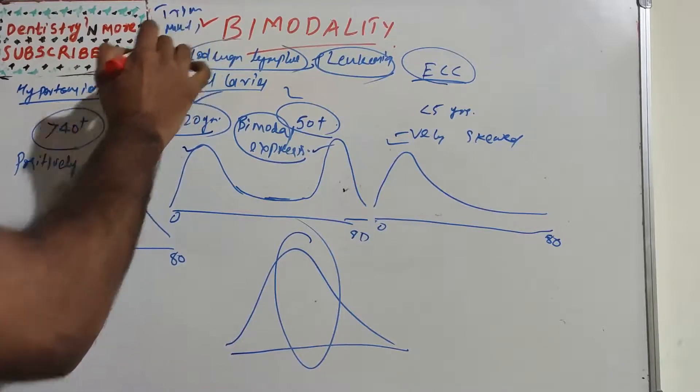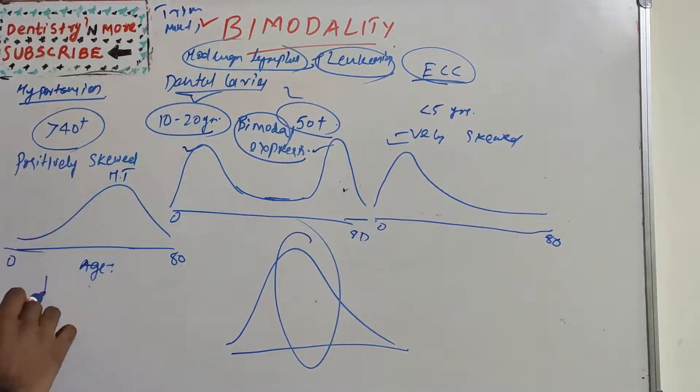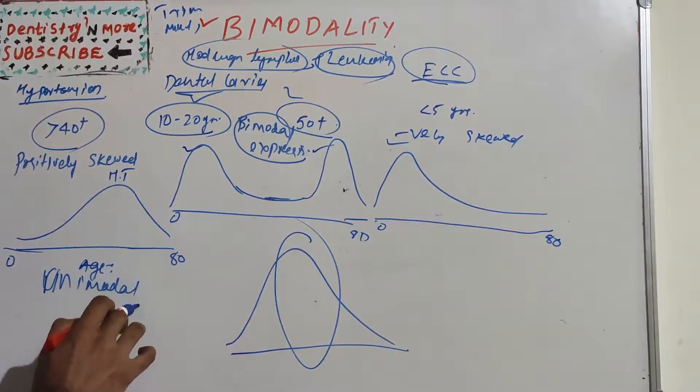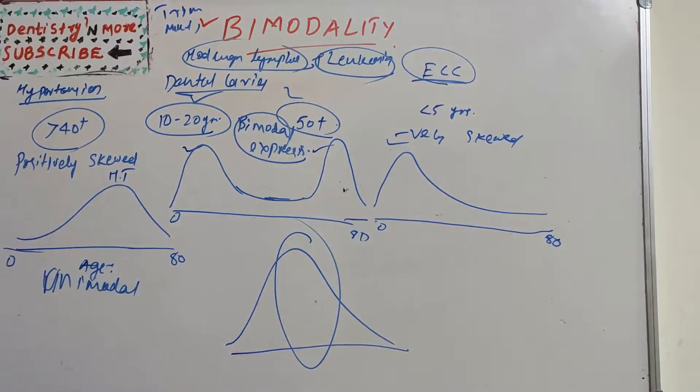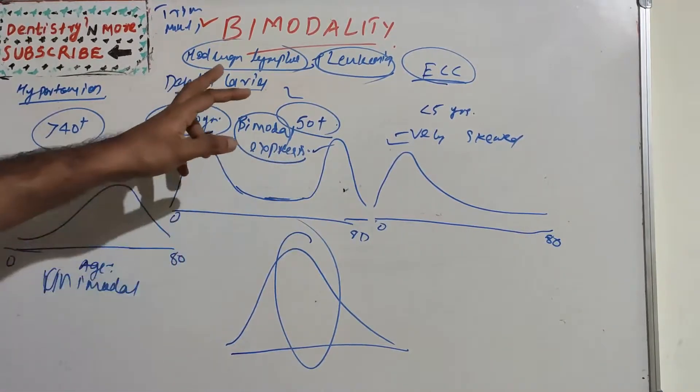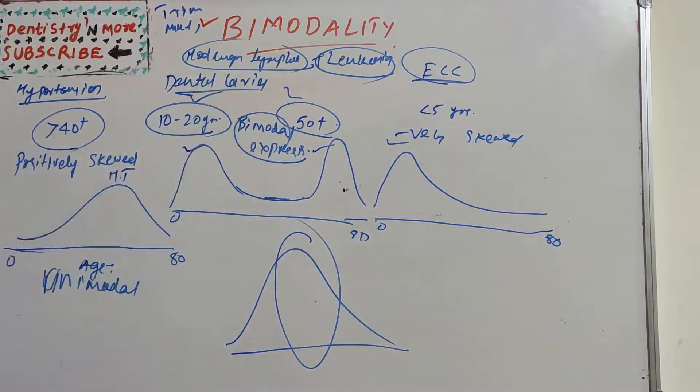And we may have conditions like trimodality or multimodality. This is all known as unimodal distribution. We have one mode—it is seen only at one peak.